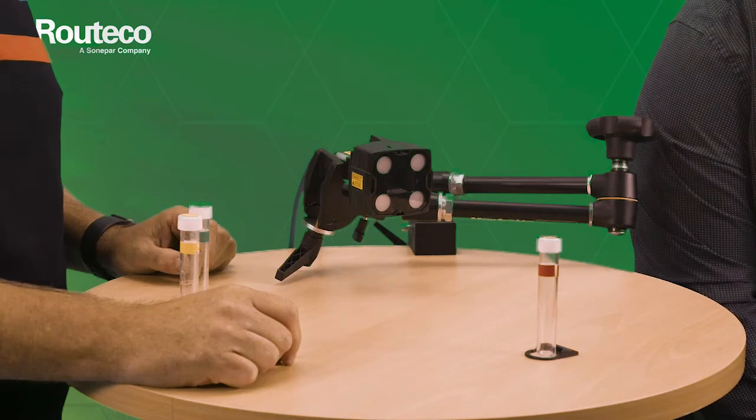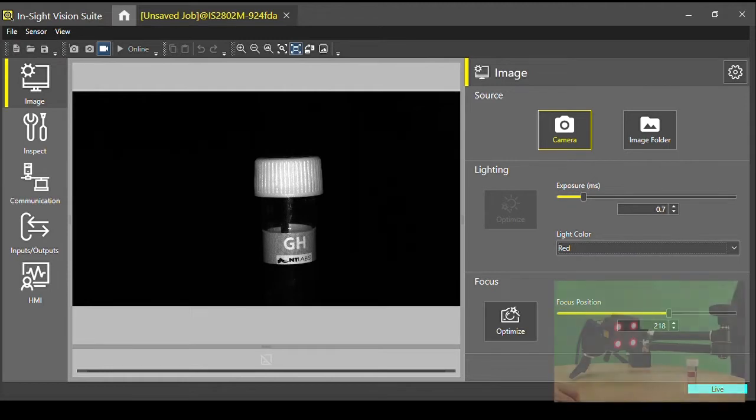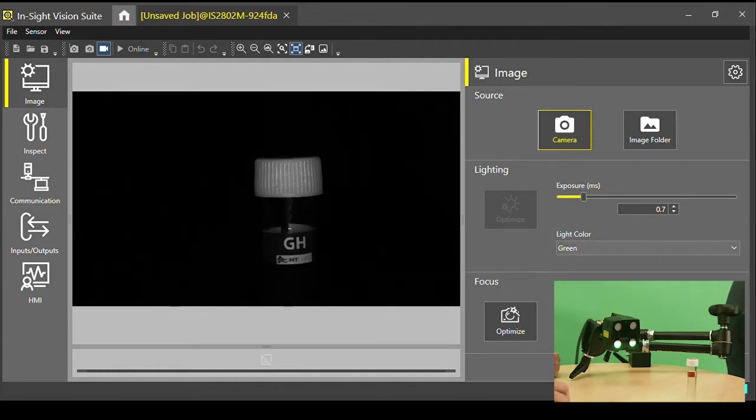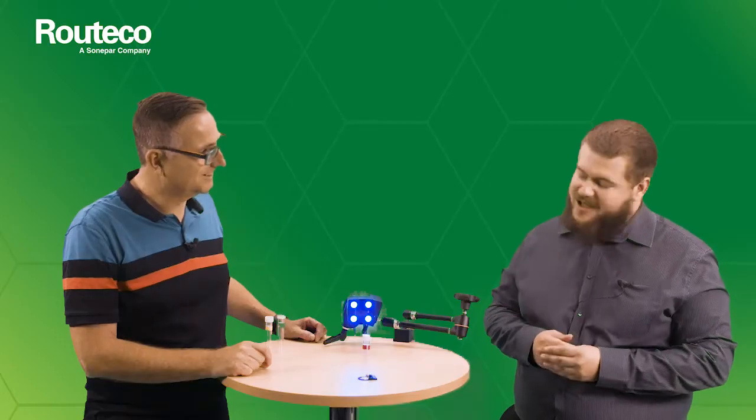So it's literally just a case of when you're in the setup screen, we can just choose between different light colours. At the moment, I'm looking at that with a white light. I can then change that to a red light. As you can see, we've got different colour light. And it will give us a different effect with our image. And again, I can flick that to green or blue. All depends on what you're trying to do with your specific application.